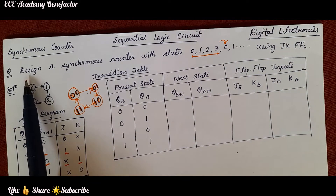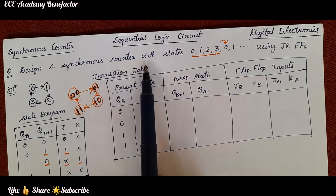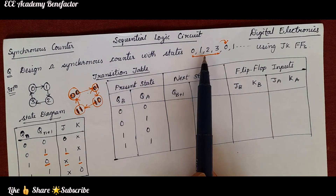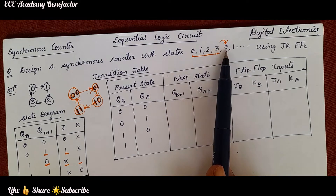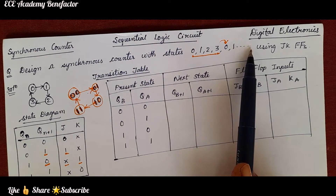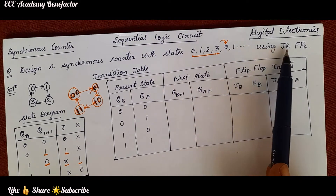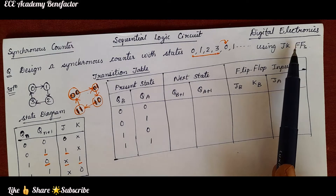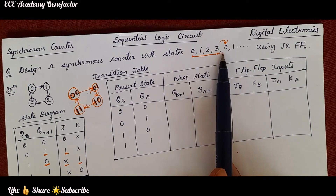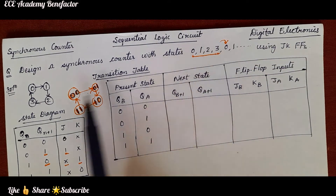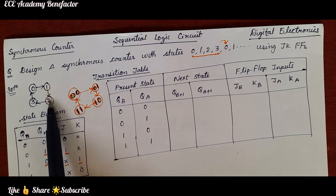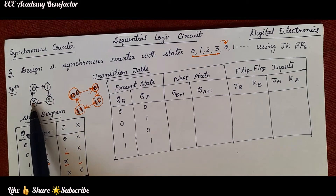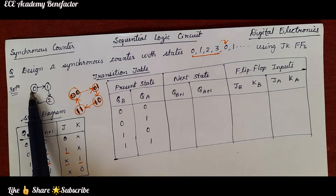The problem is: design a synchronous counter with the states 0, 1, 2, 3. After 3 it is going back to 0, 1, 2, 3 and so on, using JK flip-flops. Based on the given information we need to draw the state diagram. The count is 0, 1, 2, 3 and after 3 it is going back to 0.